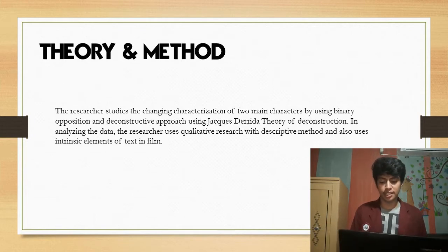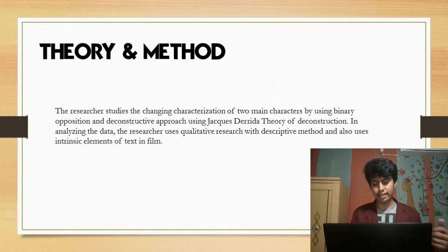The third topic is the theory and method. The researcher studies the changing characterization of the two main characters by using binary opposition and a deconstructing approach, using Jacques Derrida's theory of deconstruction. Binary opposition is a method for seeing something in comparison, or two different sides — like good and bad, light and dark, antagonist and protagonist. Deconstruction is a theory that allows the reader to see literary work with new thought and a new perspective through critical thinking. Sometimes the writer gives us only one meaning in a text, but with deconstruction, we can see many possibilities in interpreting literary work.